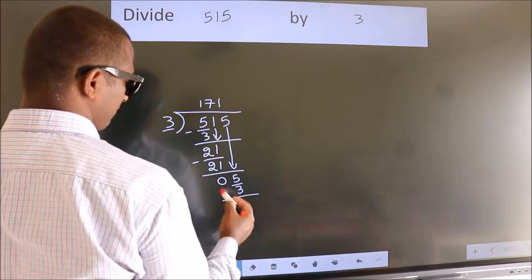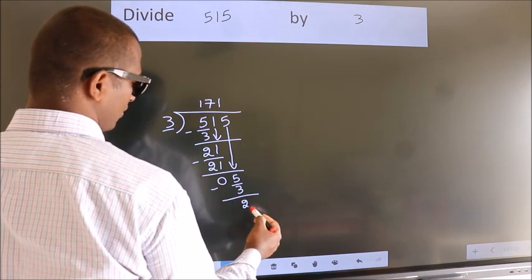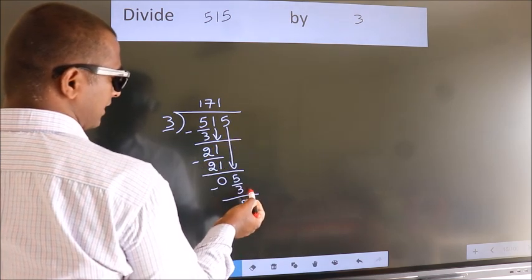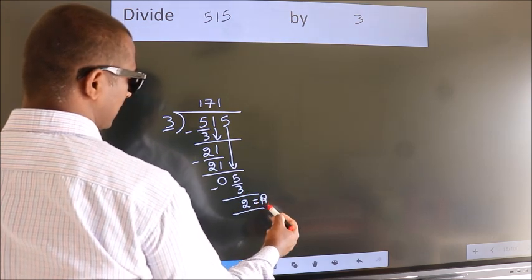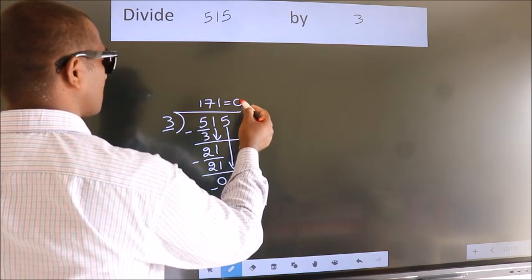Now we subtract, we get 2. No more numbers to bring it down, so we stop here. This is our remainder, this is our quotient.